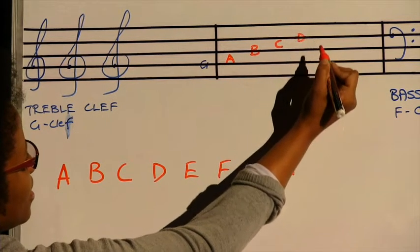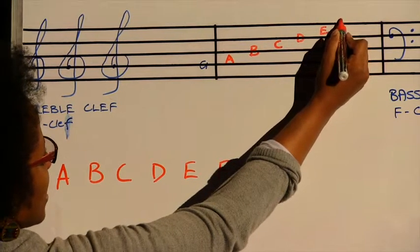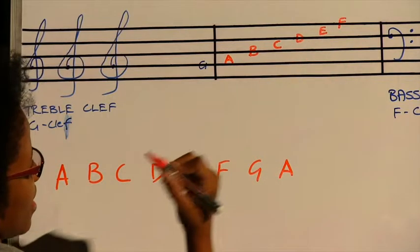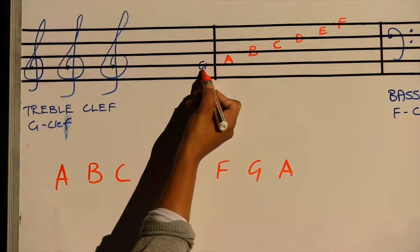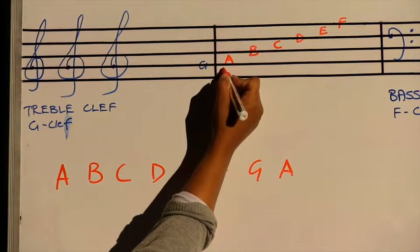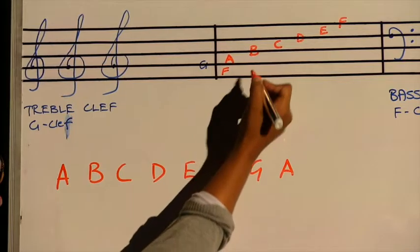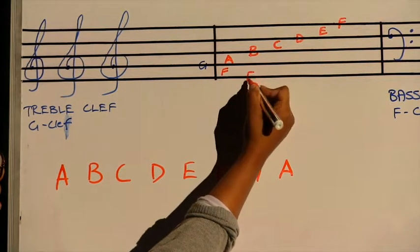Then going backwards from that G, going backwards, then that space will be F, then the line will be E.